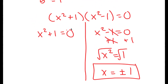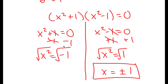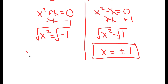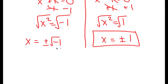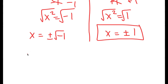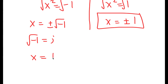Now for x squared plus 1 equals 0, I'm going to subtract 1 on both sides, so I get x squared is equal to negative 1. I'm going to again take the square root on both sides. But this time I get x is equal to positive or negative the square root of negative 1. The square root of negative 1 is equal to i, so I get x is equal to positive or negative i.